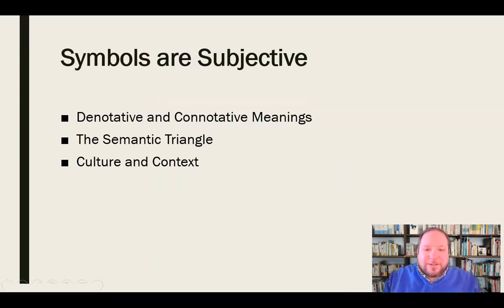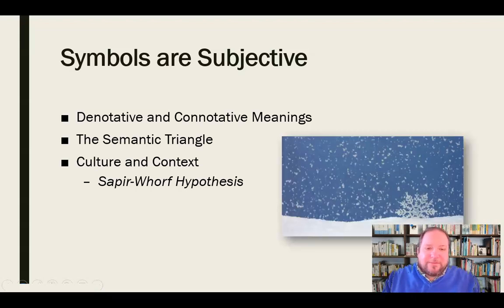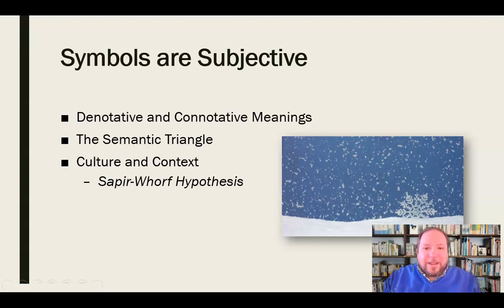This leads us to an interesting discussion about what's called the Sapir-Whorf hypothesis, which has to do with linguistic relativity — the idea that you can look at a culture and determine what's important to that culture by looking at their language and how many words they have for something. The famous example is that Eskimos have many words for snow — some say 50, some say 100 or 150. They have a lot of words for snow because snow is such an important part of their lives. They need to differentiate between different types of snow because it's going to have a real impact on their day-to-day lives.